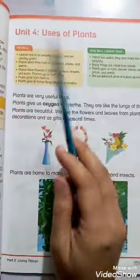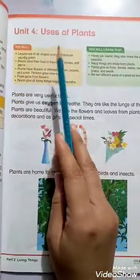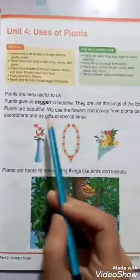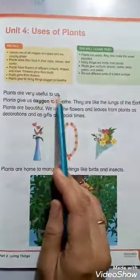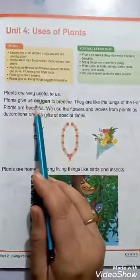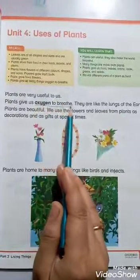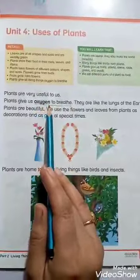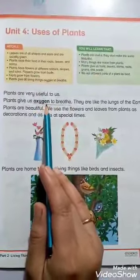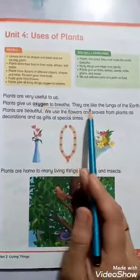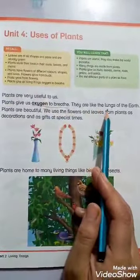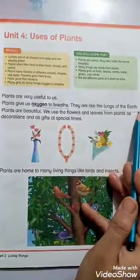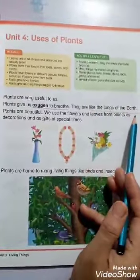Now, let's take a quick revision of unit number 4: uses of plants. What are the uses of plants? Kis li use hoti hain plants? Plants are very useful to us. Bahat useful hain because they give us oxygen to breathe. Without oxygen, the living things cannot survive. So oxygen is the most important thing we get from the plant. They are like the lungs of the earth. Lungs of the earth — the plants are the lungs of the earth.